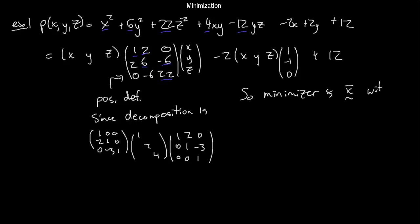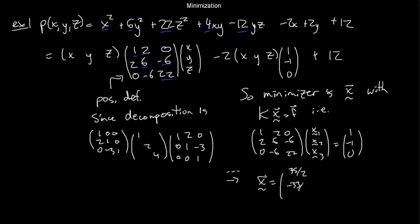You have a minimizer, and it's a unique global minimizer because you have a positive definite matrix of quadratic coefficients. All you do is solve the equation Kx = f. In this case, that means you solve [1,2,0; 2,6,-6; 0,-6,22] times (x̃₁, x̃₂, x̃₃) equals (1,-1,0). We know how to do that. Row reduce, do Gaussian elimination. You will find that x̃ is (-35/2, -33/4, -9/4). Again, not something you would find by guessing and checking. That's the unique minimizer of this function. The smallest this function can be is its value at this point.